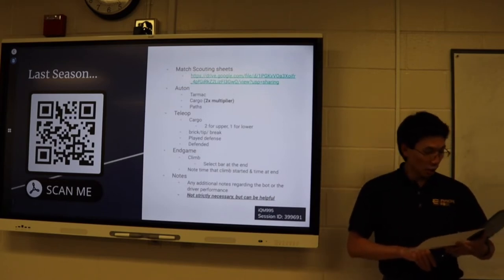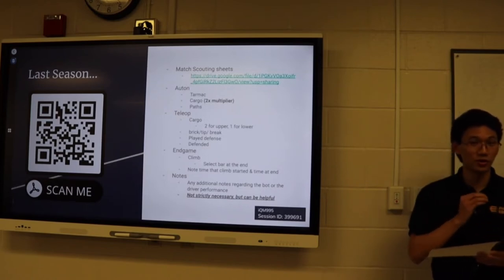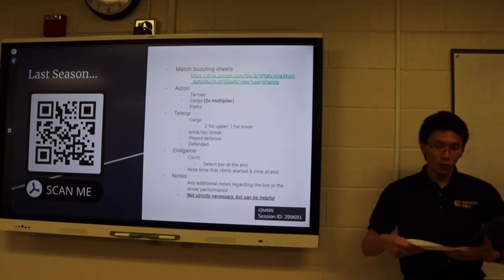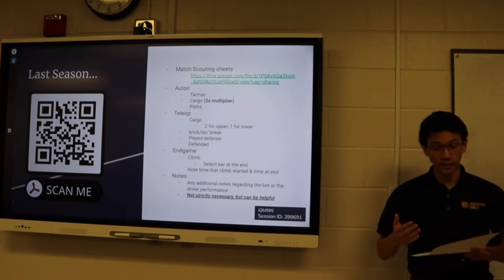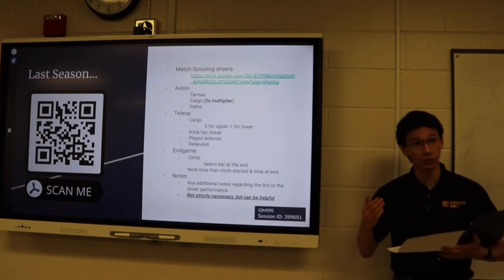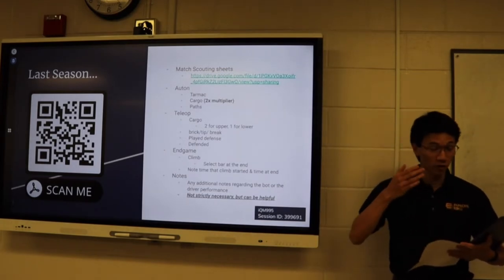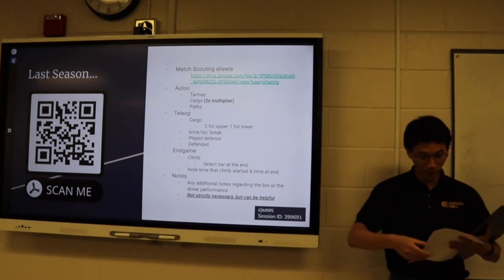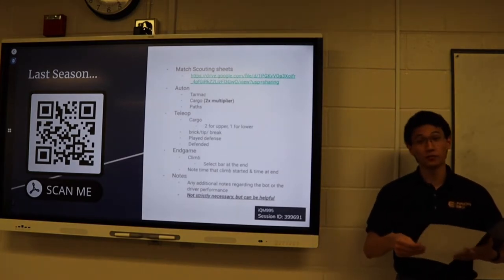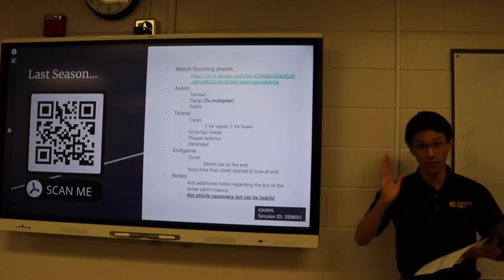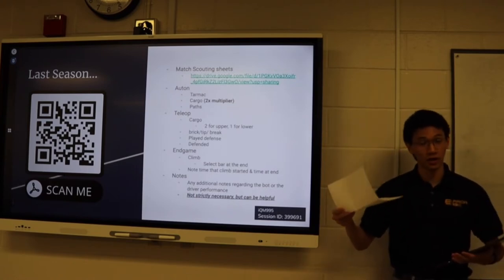And then there is the notes section. Now this isn't strictly necessary, but it can be very useful in choosing our alliances. We don't have anything on this scouting sheet to say how confident a driver is or how competent the bot will be. So say we have a robot that can shoot a ton of balls really consistently into the upper hub, right? But if that robot is very top-heavy, that means that it will be very susceptible to defense. The moment it gets hit, it's going to wobble back and forth and it overshoots.